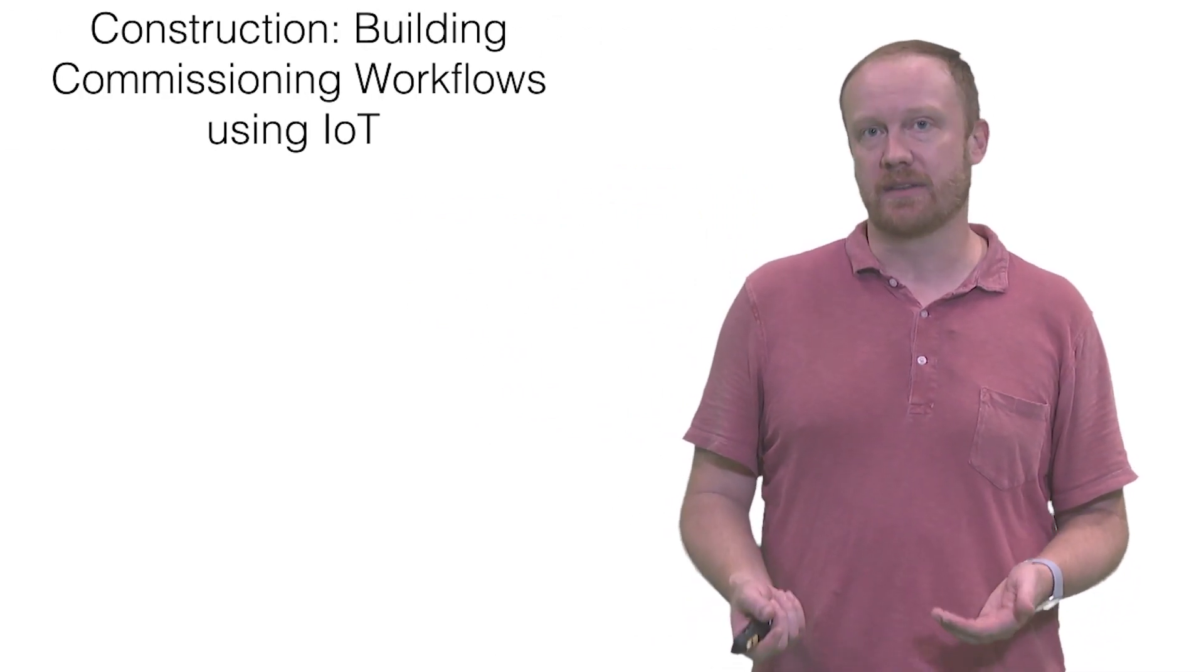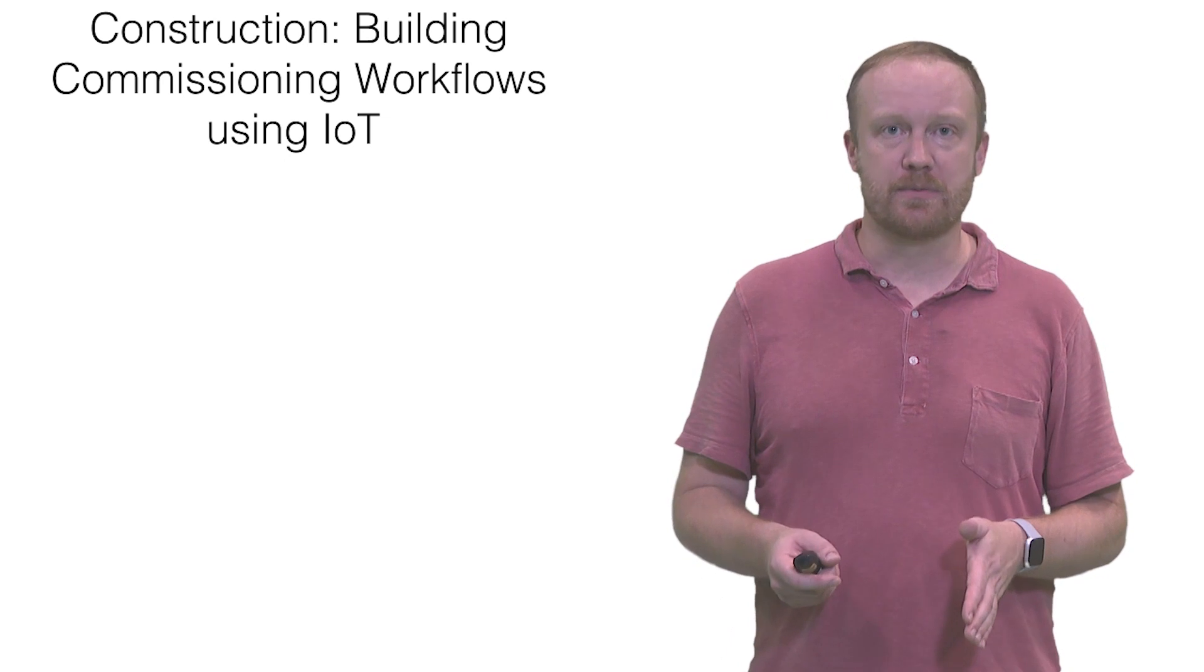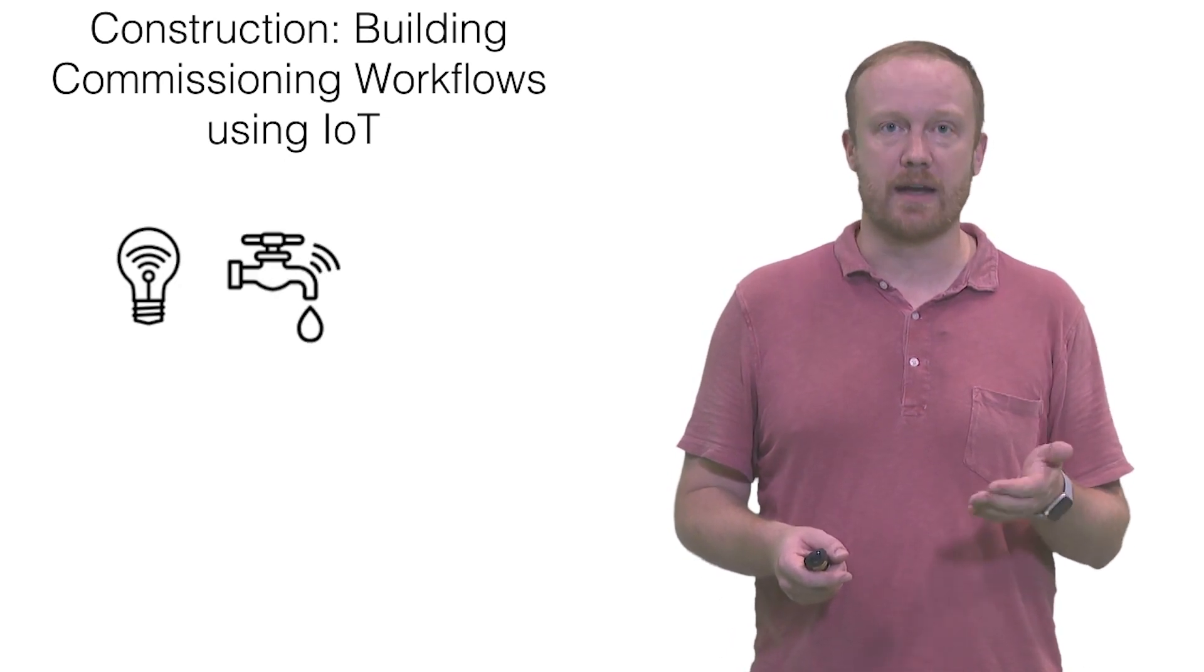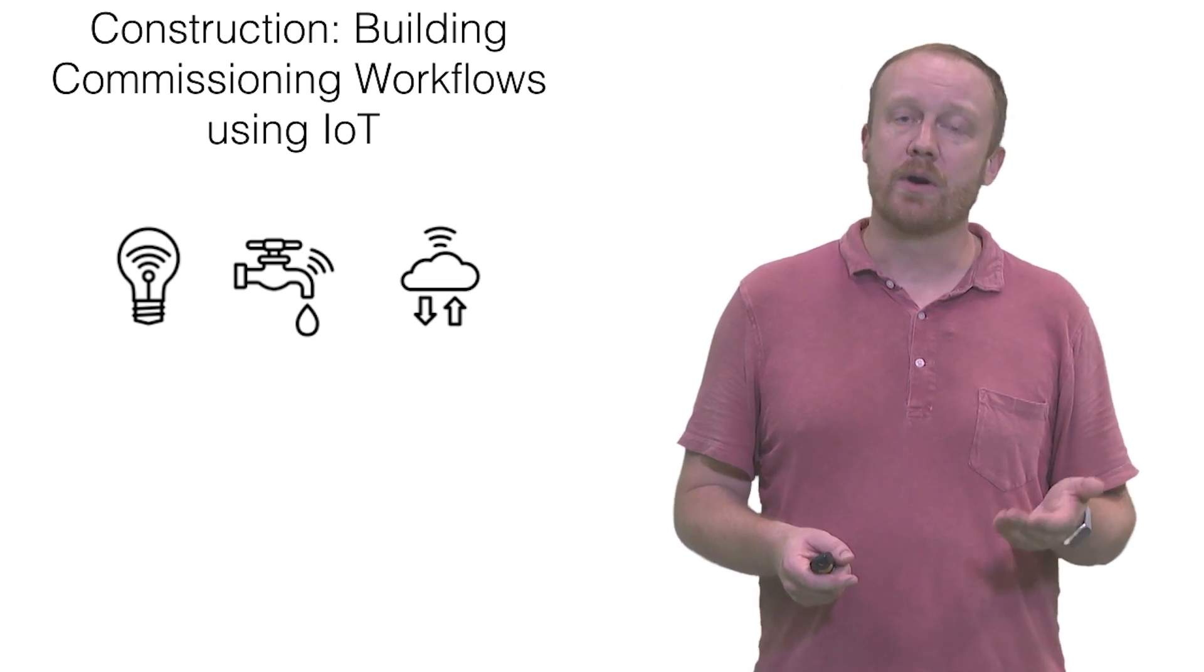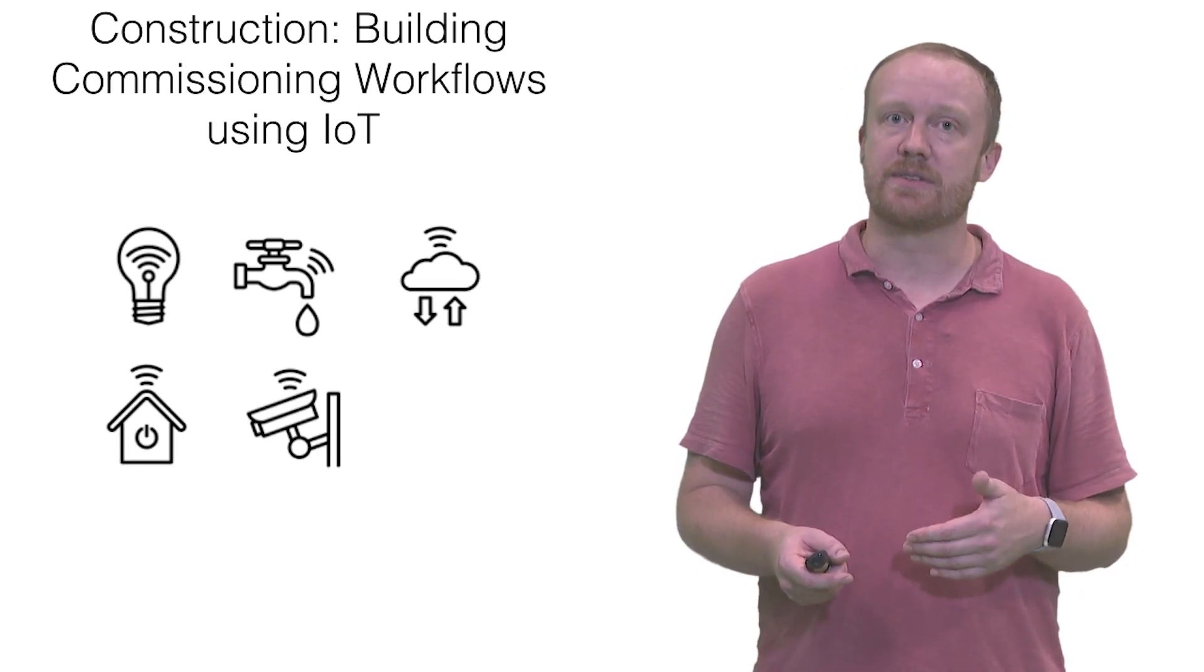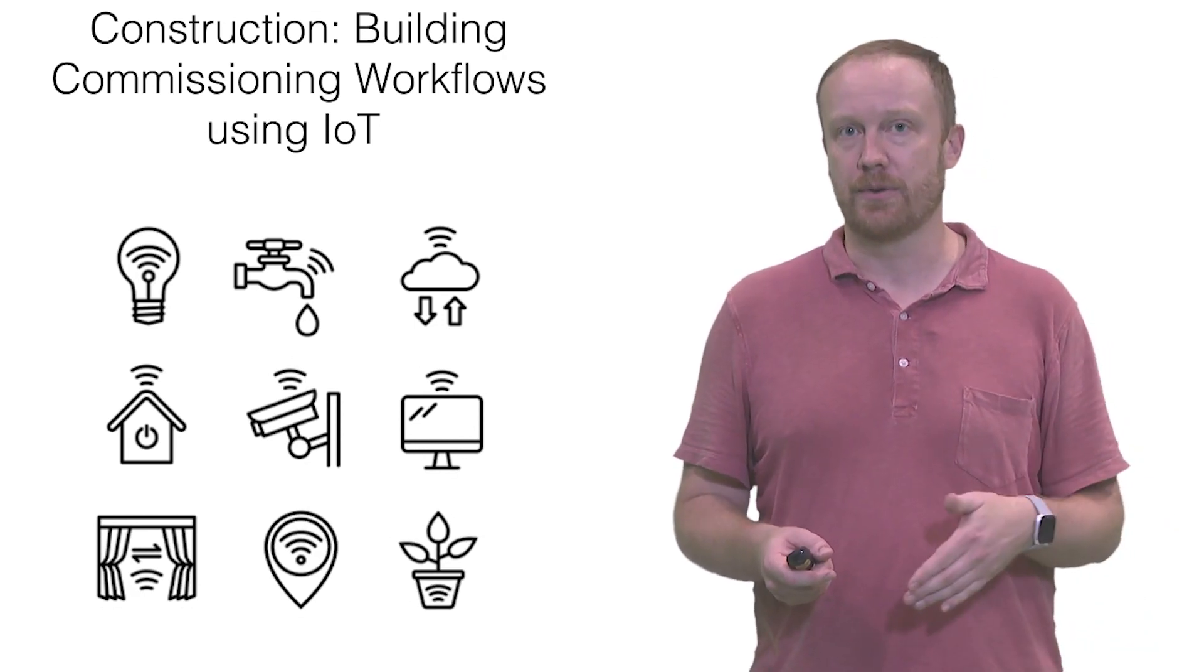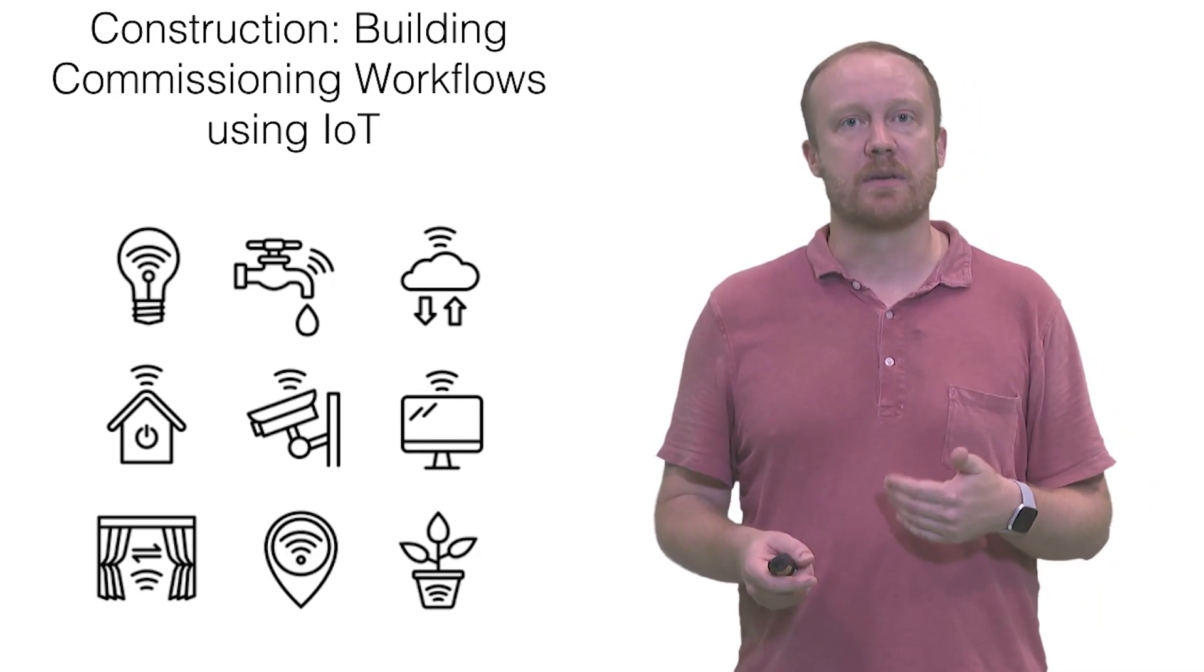The second dataset that we'll use is from the construction phase of the building lifecycle. In modern commercial buildings, there are sensor networks installed in a building that control systems such as lighting and air conditioning. One of the goals of the construction process is to confirm that these systems are working well before being handed over to the owner. This process is called commissioning.